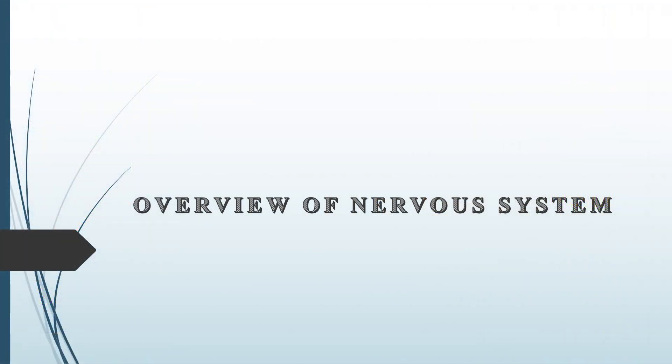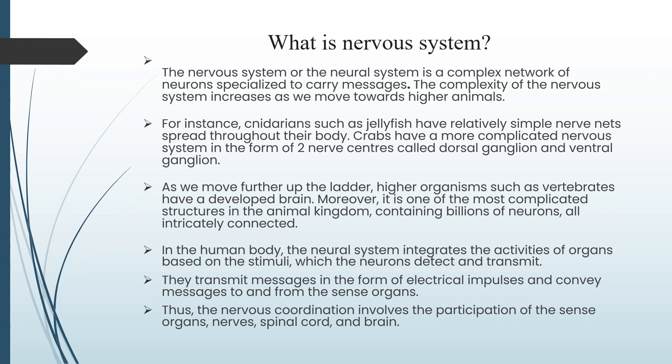Now we are going to see about overview of nervous system. What is nervous system? The nervous system or the neural system is a complex network of neurons specialized to carry messages. The complexity of the nervous system increases as we move towards higher animals. For instance, Cnidarians such as jellyfish have relatively simple nerve nets spread throughout their body.